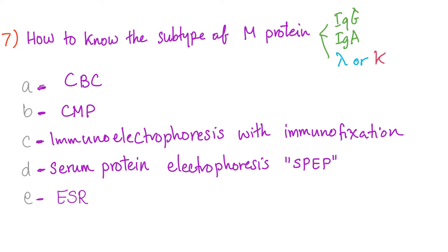The seventh question: How to know the subtype of M protein? In other words, how to know if it's IgG or IgA, or IgG lambda versus IgG kappa? Is it by complete blood count, CMP, serum protein electrophoresis with immunofixation, serum protein electrophoresis alone, or ESR? The answer is C — serum protein electrophoresis with immunofixation. It will tell you the quality, not the quantity, of the M protein, of the paraprotein.